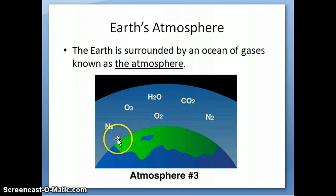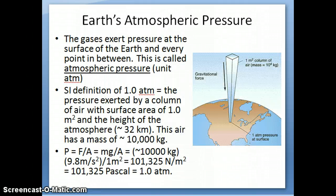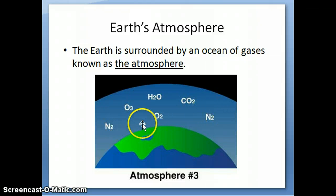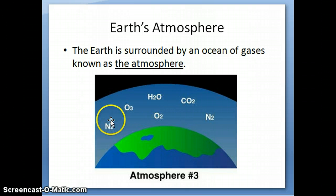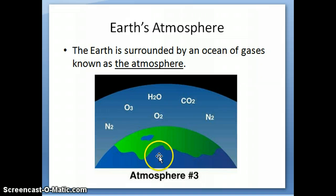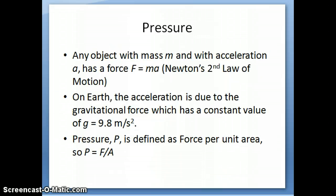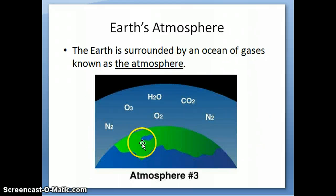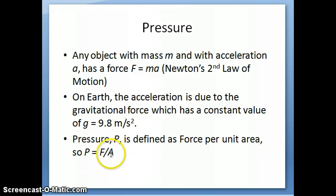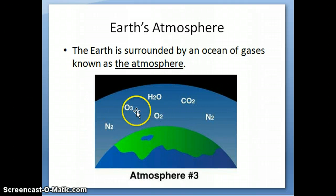There are all these different gases present in the atmosphere. Now, if you have all these gases — remember, gases are also composed of molecules, and molecules have mass — that means they're all going to be attracted to the surface of the Earth by the Earth's gravitational force. In other words, all these gases exert some kind of force on the surface of the Earth, and that force hitting a particular surface area of the Earth is called the pressure of this atmosphere.